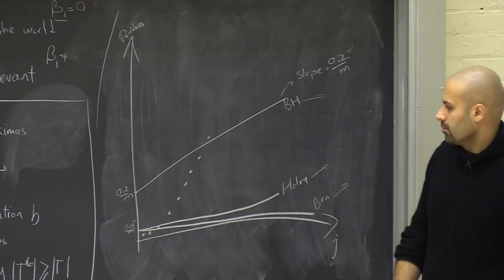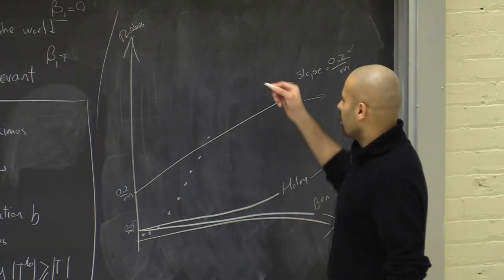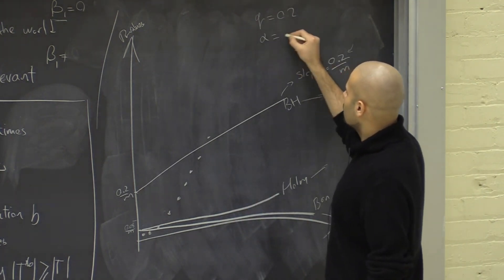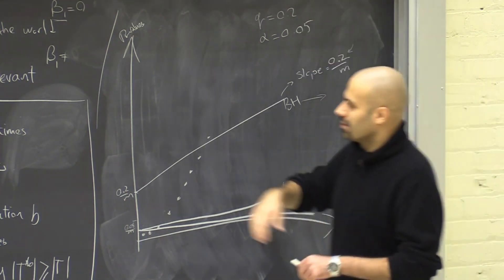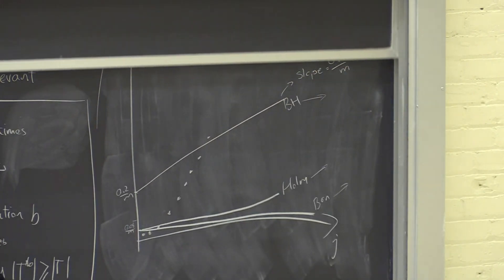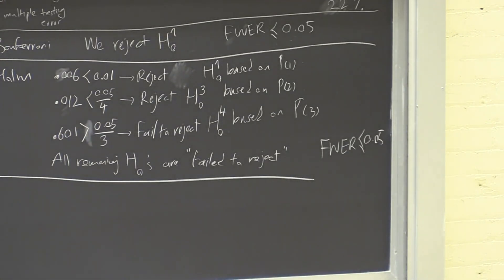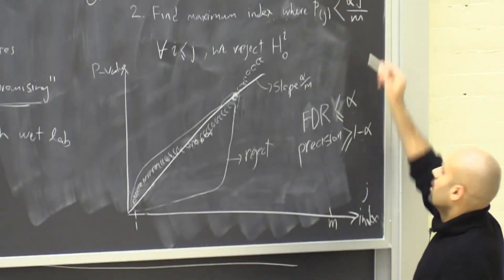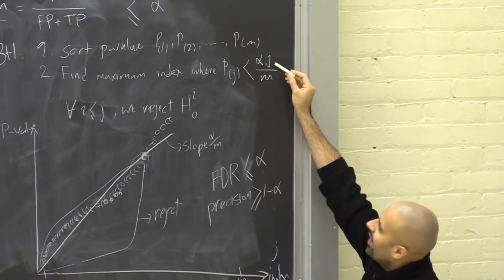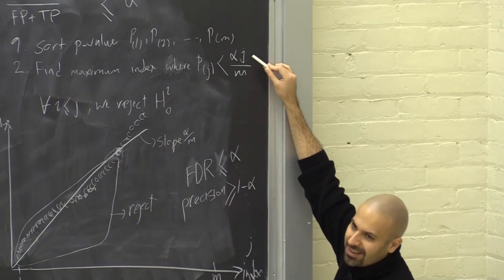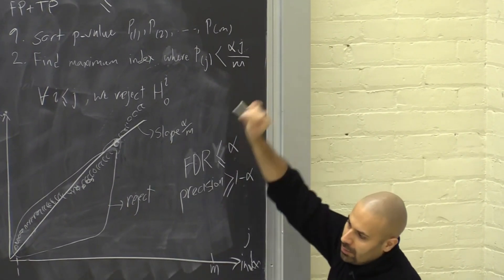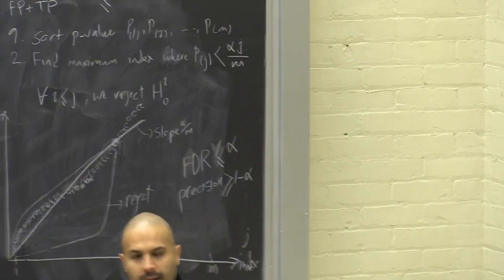So the thing is, in your textbook Q is used for this, alpha is used for this. But I was trying to make it easier so that you see some similarities between these methods. So the thing is, here it's about alpha over M, alpha over M and decrementing the denominator. And then that one is also about alpha over M and incrementing the numerator. You just make the numerator larger, with Holm you make the denominator smaller.